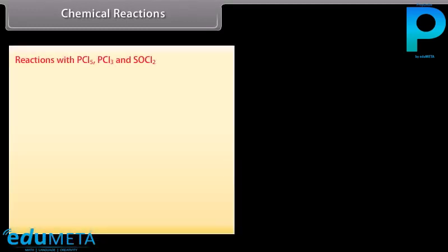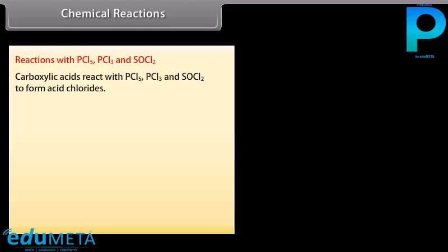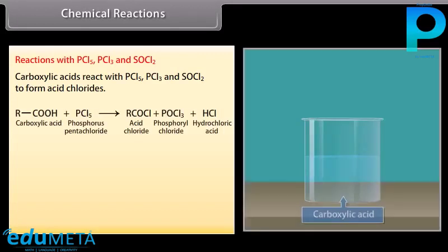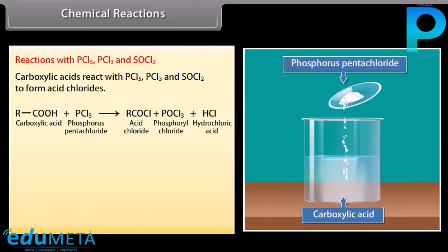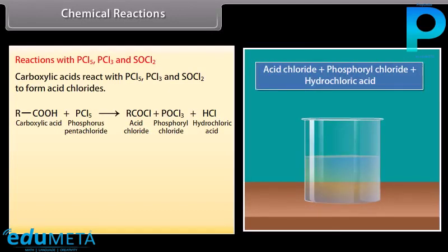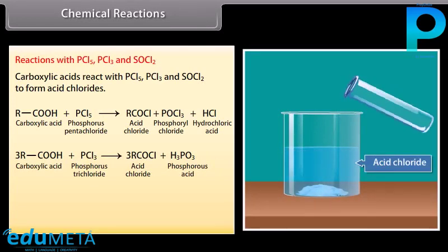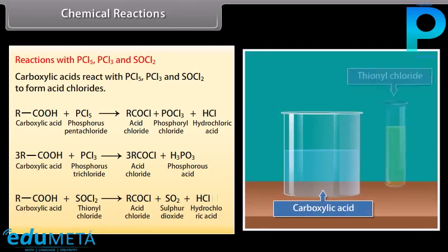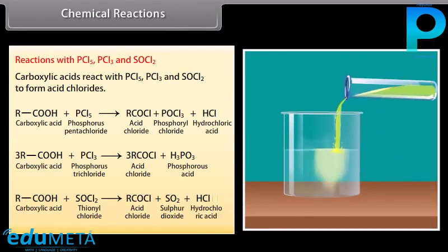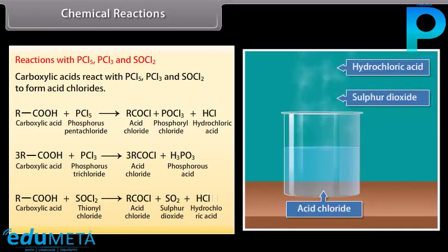Reactions with phosphorus pentachloride, phosphorus trichloride, and thionyl chloride: carboxylic acids react with these reagents to form acid chlorides. Carboxylic acid reacts with phosphorus pentachloride to form acid chloride, phosphoryl chloride, and hydrochloric acid. Carboxylic acid reacts with phosphorus trichloride to form acid chloride and phosphorous acid. Carboxylic acid reacts with thionyl chloride to form acid chloride, sulfur dioxide, and hydrochloric acid.